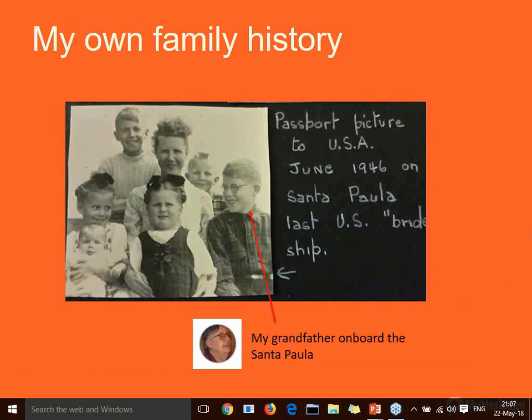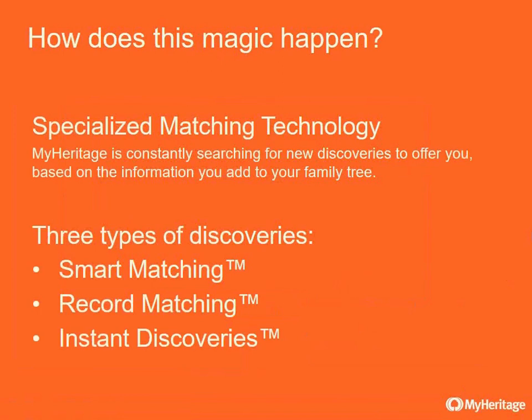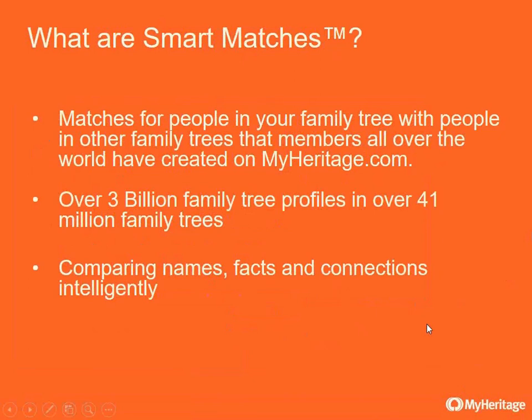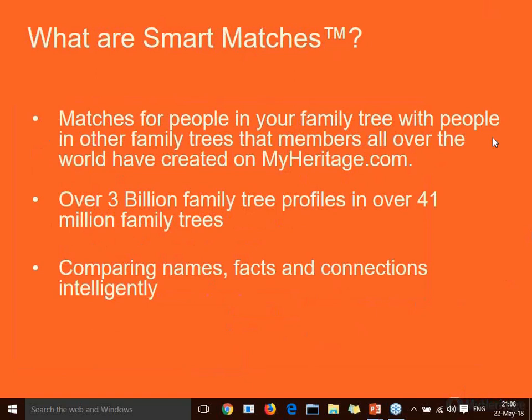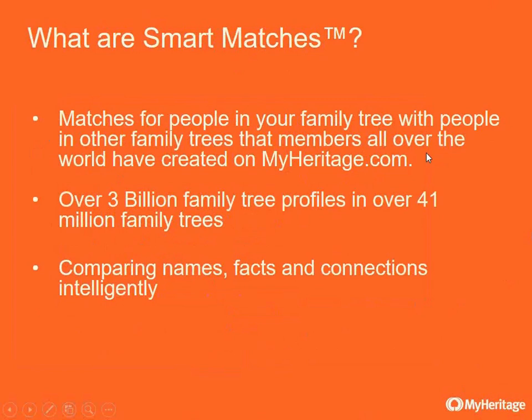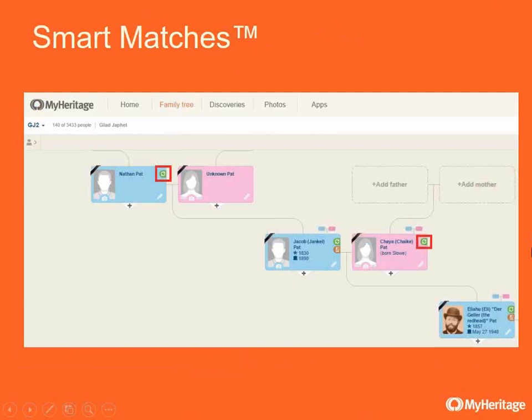So how did this magic happen? MyHeritage has specialized matching technology that constantly searches for new discoveries based on the information you add to your family tree. There are three types of discoveries we're going to talk about today: smart matching, record matching, and instant discoveries. Smart matches are matches for people in your family tree from other family trees that members all over the world have created on MyHeritage.com. There are over 3 billion family tree profiles in over 41 million family trees.